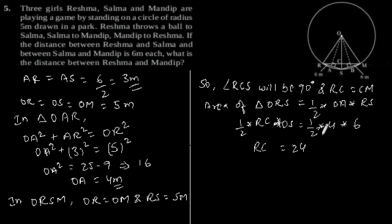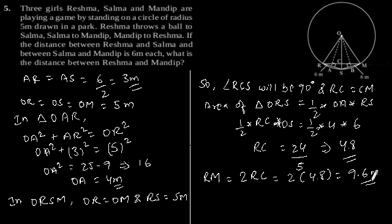Which implies RC is equal to 4.8 and as we know RC is equal to CM. So, RM is equal to 2 RC which gives 2 into 4.8 which is equal to 9.6 meter.